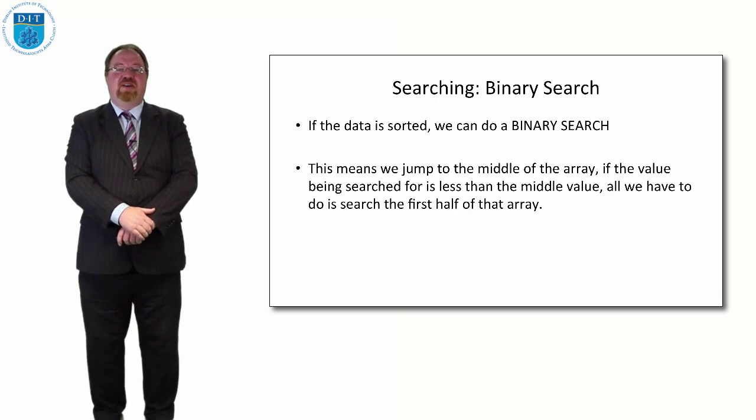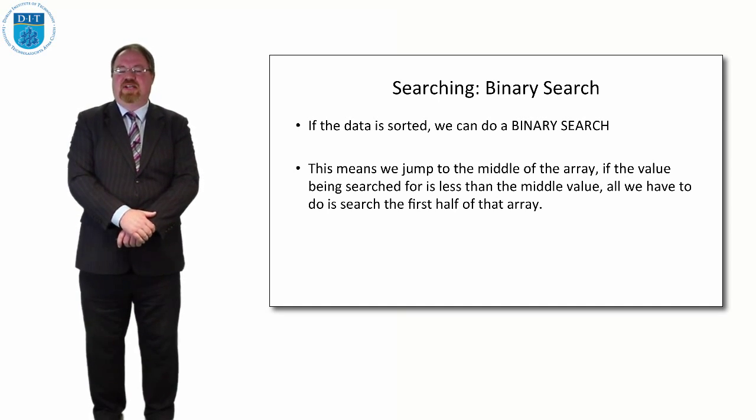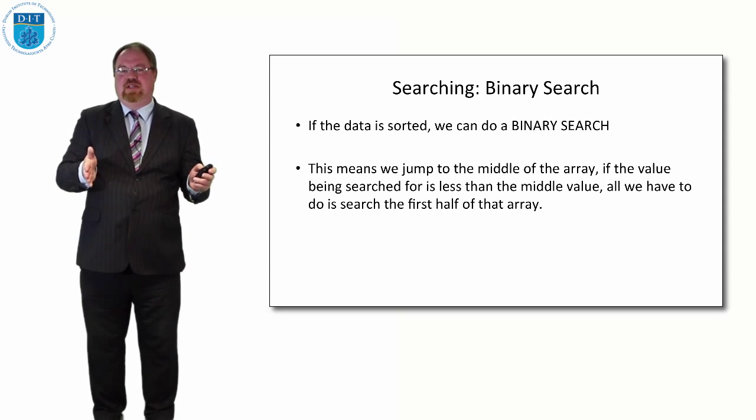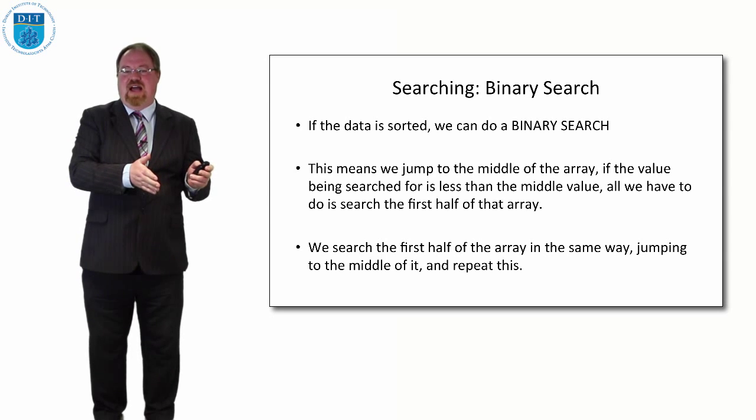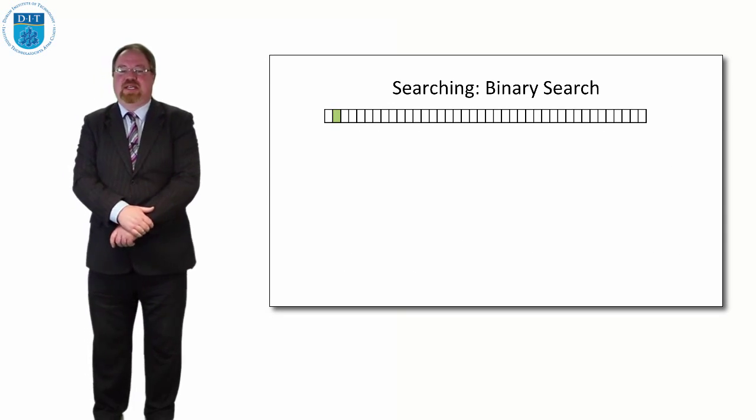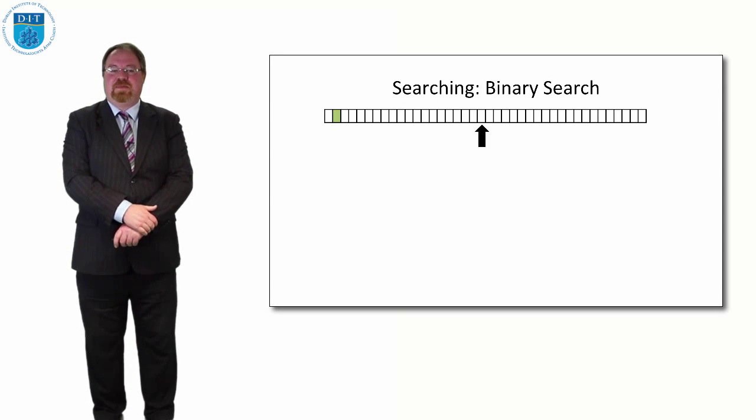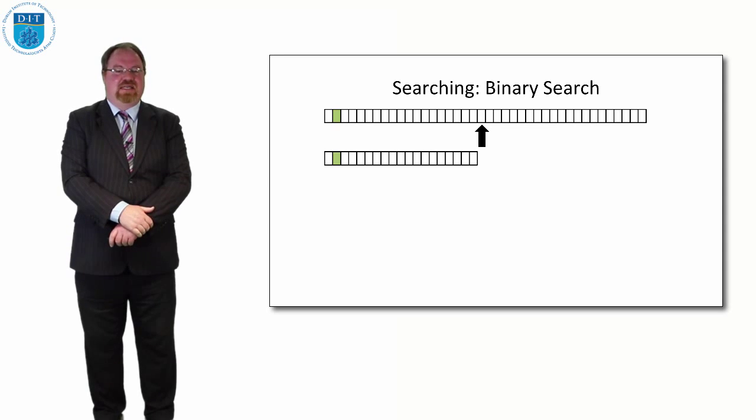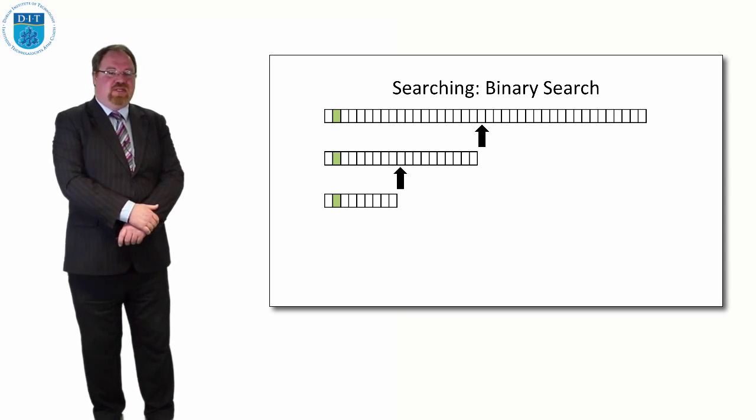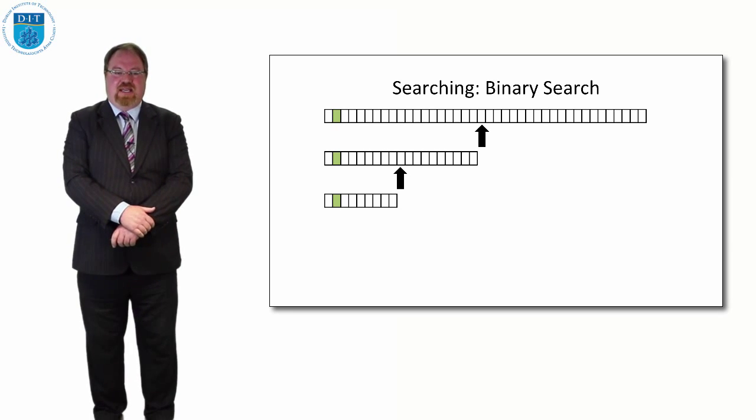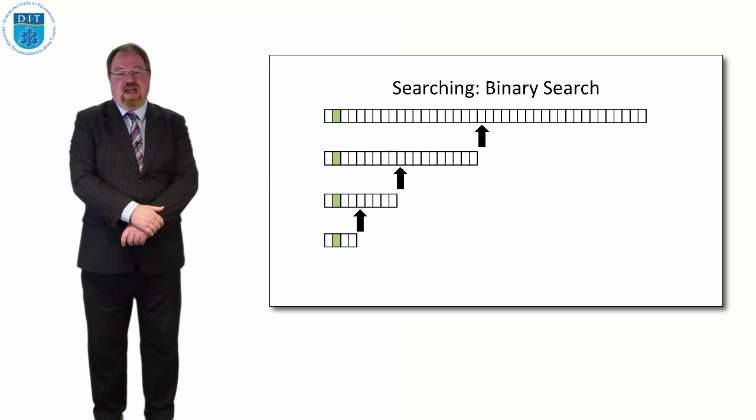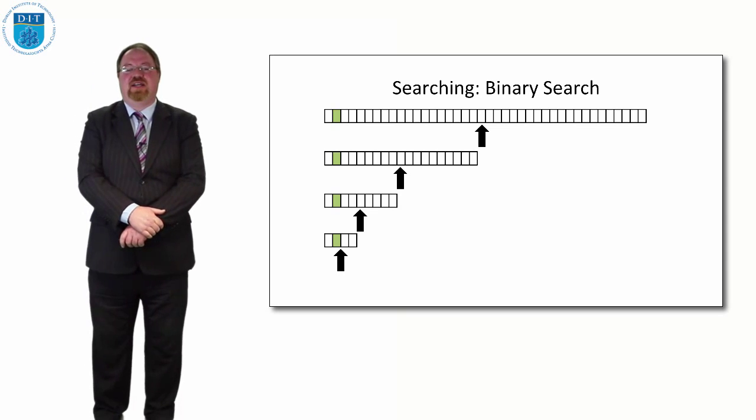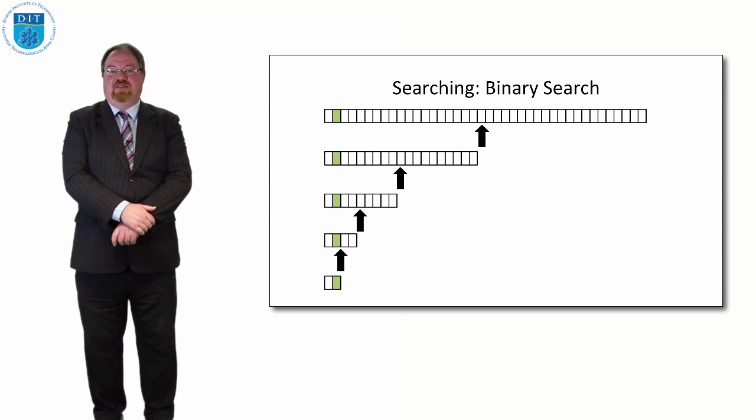If the value is less than the middle value then we just forget about the upper half of the array and just search the lower half of the array. Then we jump to the middle of that half and then we check its value is it less than or greater than. So we'll see with an animation we jump to the middle. If the value in this case is the second value along is less than the middle then let's cut out the top half of the array and jump to the middle of the half of the array. We jump because the value is less than the current value we cut that array in half again and look at the jump to the middle of the array again. Then we cut that in half because it's in the lower half of the array and check is the number we're looking for in the first top half or the bottom half of the array. Then we cut it again and then we found the value we're looking for.